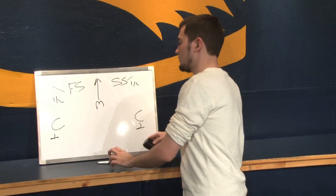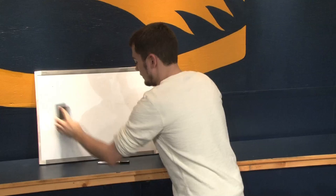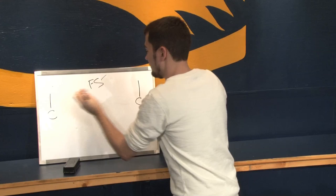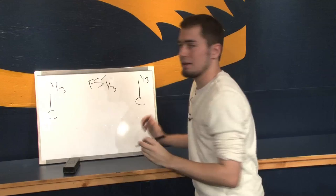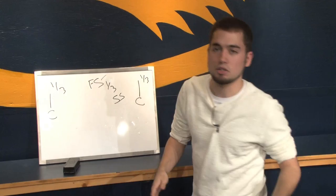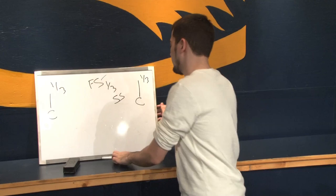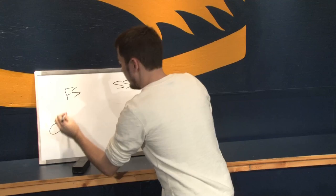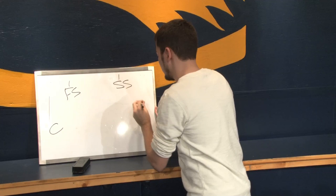Cover three is basically like cover one but it's a zone coverage as opposed to cover one which is man-to-man. Instead of the corners playing man-to-man, they have deep third responsibility, same with the free safety. The field gets divided into thirds and each deep defensive back gets a third. The strong safety might be on a blitz, down in the box for run support, or playing robber coverage. Cover four: again a two-high shell, but now the field is divided into four quadrants where the corner, free safety, strong safety, and the other corner are each responsible for a quarter of the field.